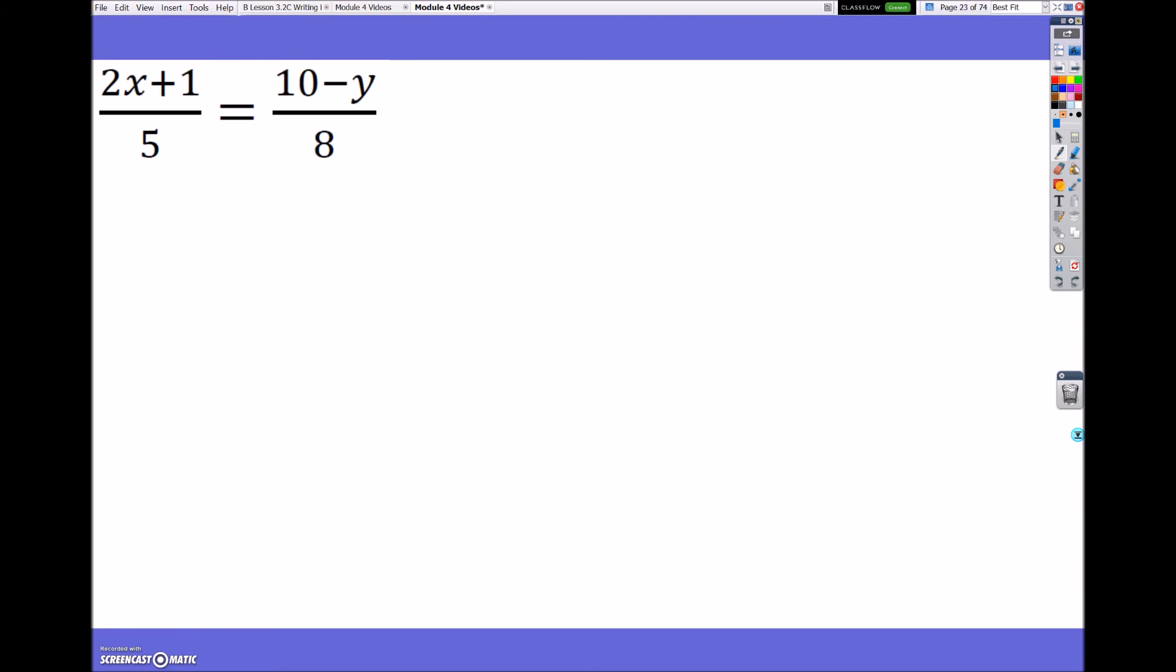And this next one. Anytime we have two fractions and they are equal to each other, the quickest way to solve this is to cross-multiply. So, I'm going to have 8 times the quantity of (2x + 1) equals 5 times the quantity of (10 - y). So, now what I'm going to do is distribute to get 16x + 8 equals 50 - 5y.